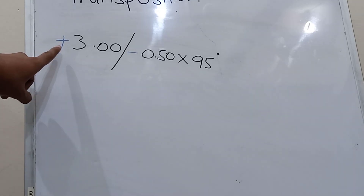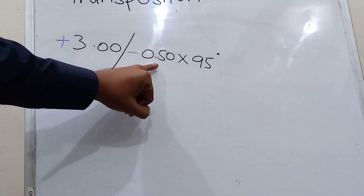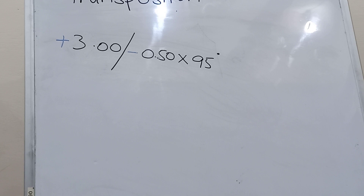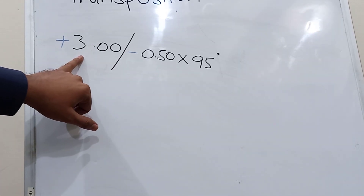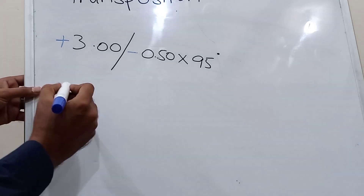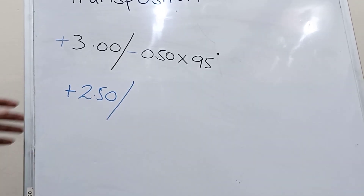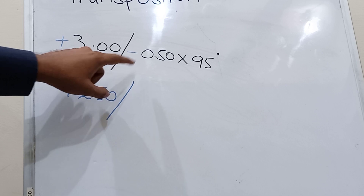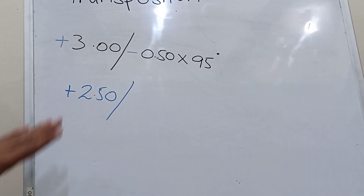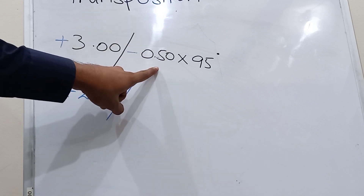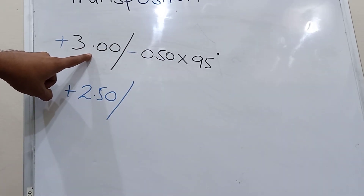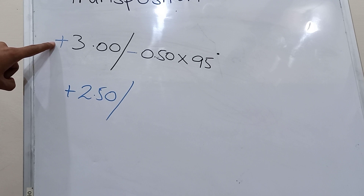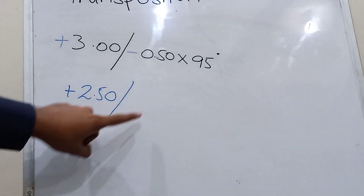In the second example, the toric prescription has a plus spherical and minus cylindrical correction, and the axis of the cylinder is 95 degrees. The first step is to add the cylindrical correction into the spherical correction algebraically. We have one value in plus and one in minus, so we deduct 0.5 from 3 and the resultant value is plus 2.5. The sign is plus because the bigger value carries the plus sign. This is our new spherical correction.